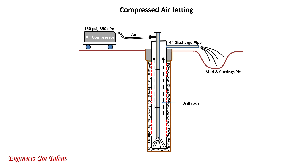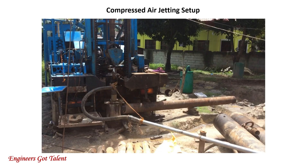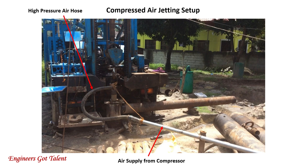Then air jet the well again. During the process, pebbles and gravel will eventually compact to fill the void spaces in the gravel pack. It is recommended to monitor the level of the gravel at the annulus and add if necessary. This is a picture of a compressed air jetting setup showing the air supply from the compressor, the high-pressure air hose connected to the well, and the 4-inch discharge pipe.